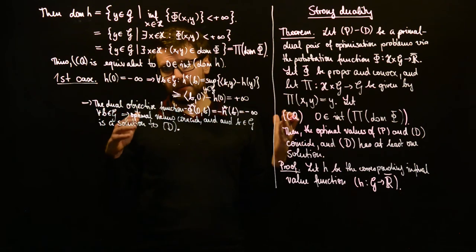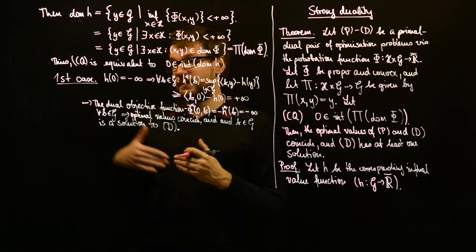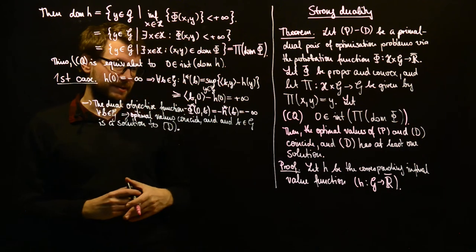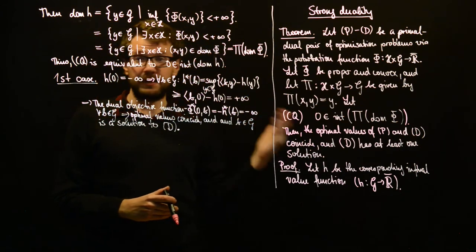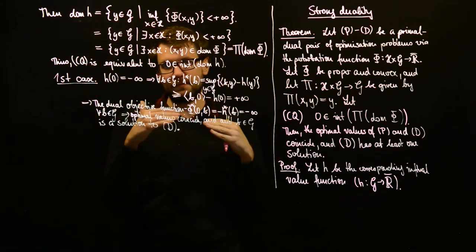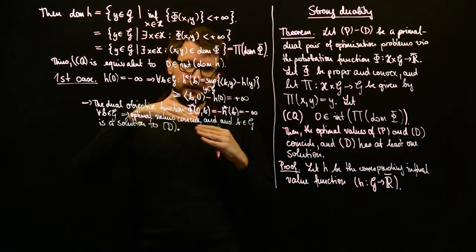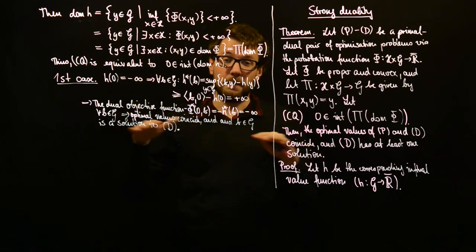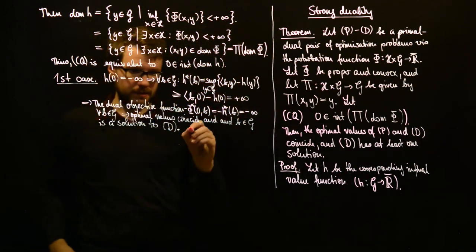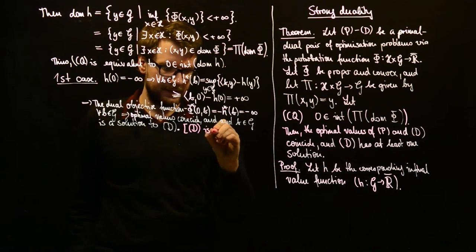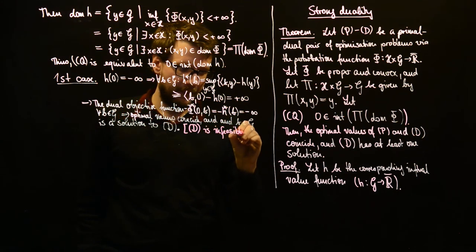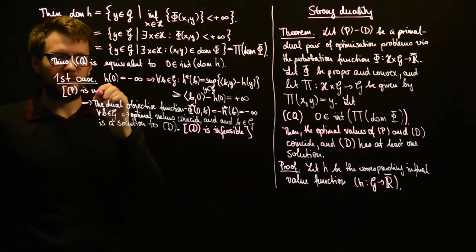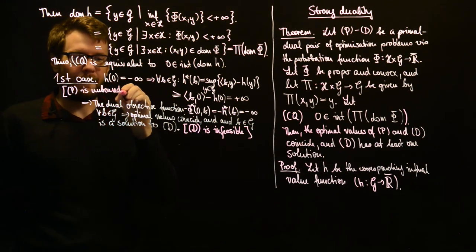In this first case, the optimal values coincide (both -∞) and any B in G is a dual solution, since all admit the value -∞. As a remark, D is infeasible here—it is a maximization problem with all values equal to minus infinity. This is the degenerate case: P is unbounded, and infeasible points in minimization are assigned +∞ while in maximization they are assigned -∞.